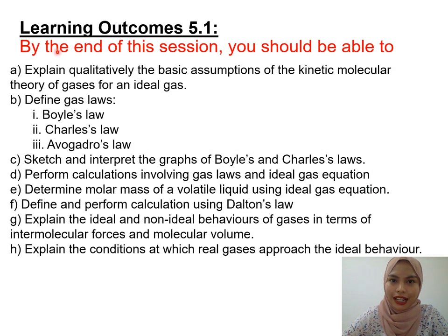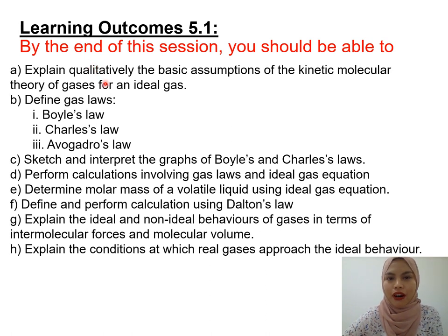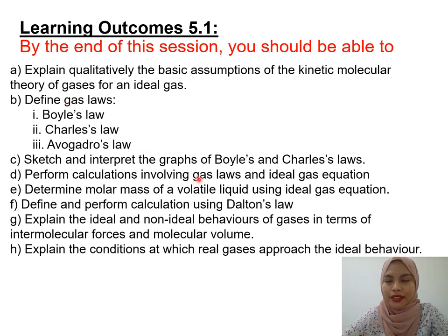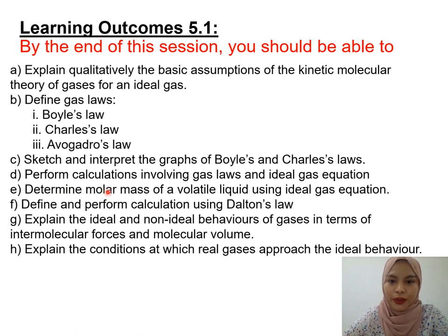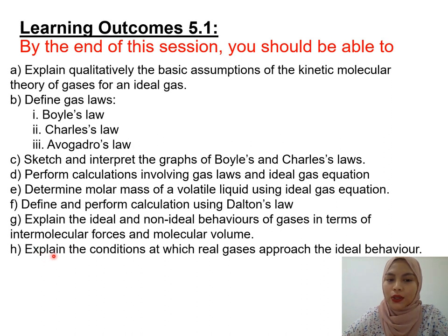Here are the learning outcomes for 5.1. By the end of the lesson, we shall know how to explain qualitatively the four basic assumptions of the kinetic molecular theory for an ideal gas, define three gas laws, sketch and interpret the graphs of Boyle's and Charles' laws, perform calculations involving gas laws and the ideal gas equation, determine the molar mass of a volatile liquid using the ideal gas equation, define and perform calculations using Dalton's law, explain the ideal and non-ideal behaviours of gases in terms of intermolecular forces and molecular volume, and explain the conditions at which real gases approach ideal behaviour.